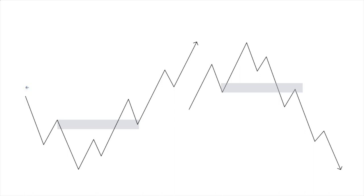So what does a breaker block do? Here we can see prices pushing to the downside, we then start to create an internal structural high, a push down, and then we break the recent swing high. As we've broken past this recent swing high, we can see price has retraced and met this price level over to the left. A breaker block does behave similarly to a support and resistance level, but there's more logic going on as to why it reacts to a certain price level and not just an imaginary line.